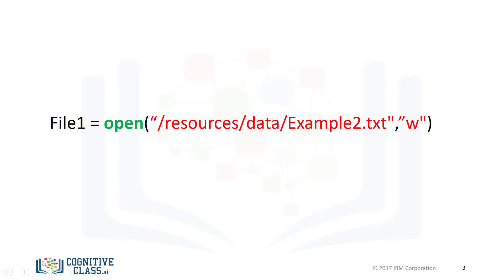We can create the file example2.txt as follows. We use the open function. The first argument is the file path. This is made up of the file name. If you have that file in your directory, it will be overwritten, and the file directory. We set the mode parameter to w for writing. Finally, we have the file object.